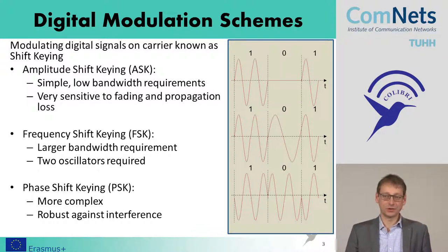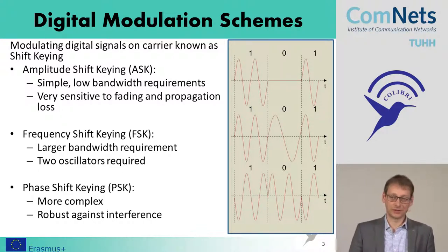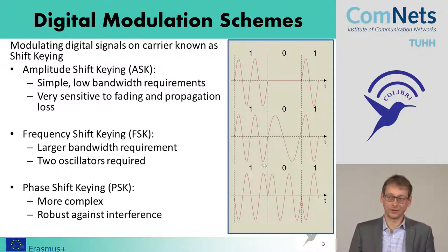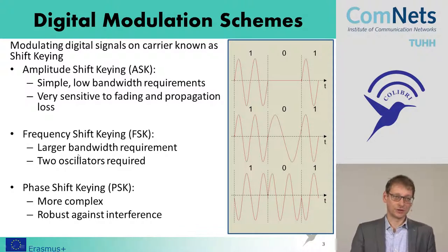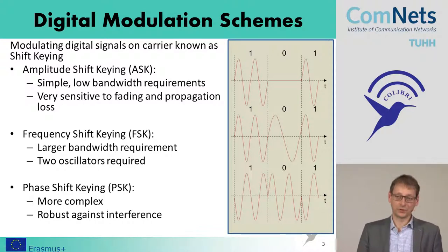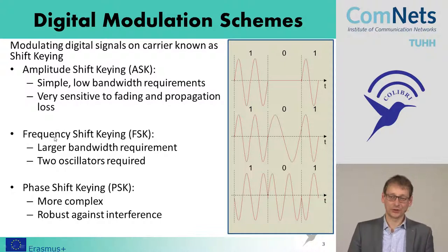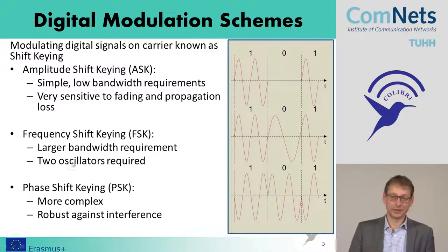A bit more robust are schemes which use different frequencies — something we also know from FM radio. We can modulate zeros and ones onto a frequency, meaning one frequency for ones and another for zeros. This requires a bit more bandwidth and two oscillators. Frequency shift keying is also sensitive to Doppler shifts: if you have high-speed movement, the frequency shifts according to the Doppler effect and you may have problems detecting the right frequency.